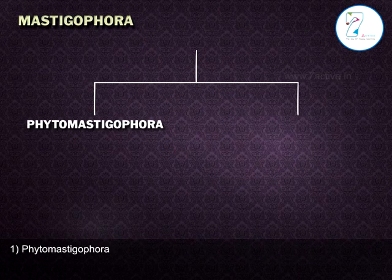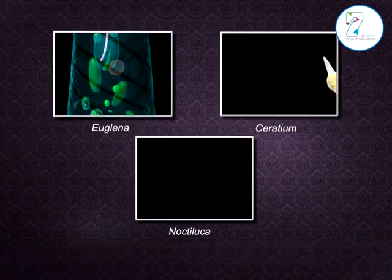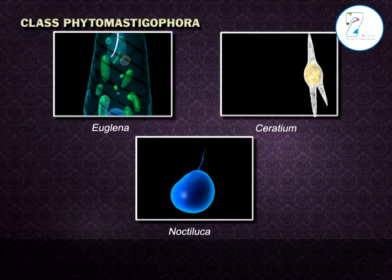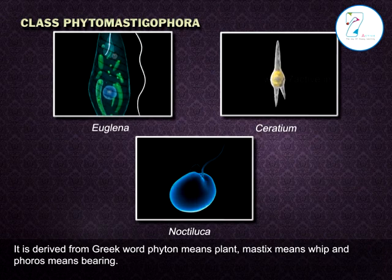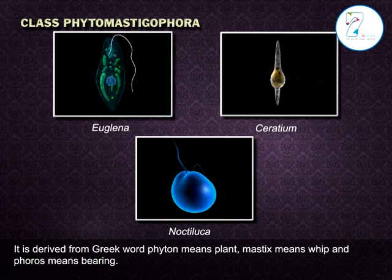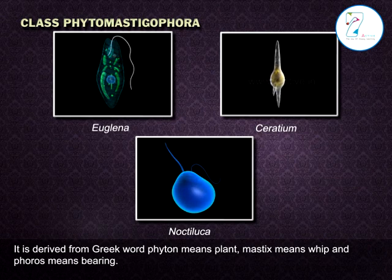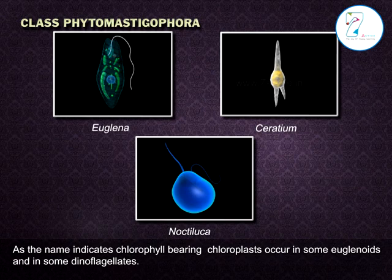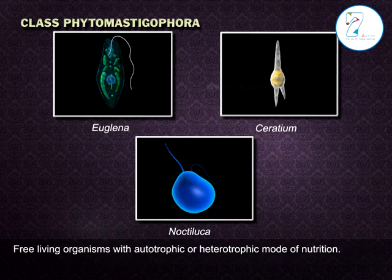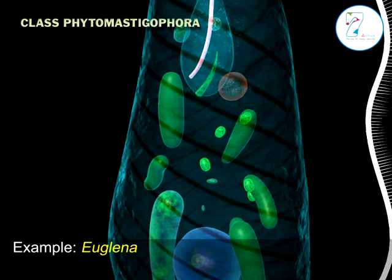Class 1: Phytomastigophora. It is derived from the Greek word phyton, meaning plant; mastex, meaning whip; and phoros, meaning bearing. As the name indicates, chlorophyll-bearing chloroplasts occur in some euglenoids and in some dinoflagellates — free-living organisms with autotrophic or heterotrophic mode of nutrition. Example: Euglena.